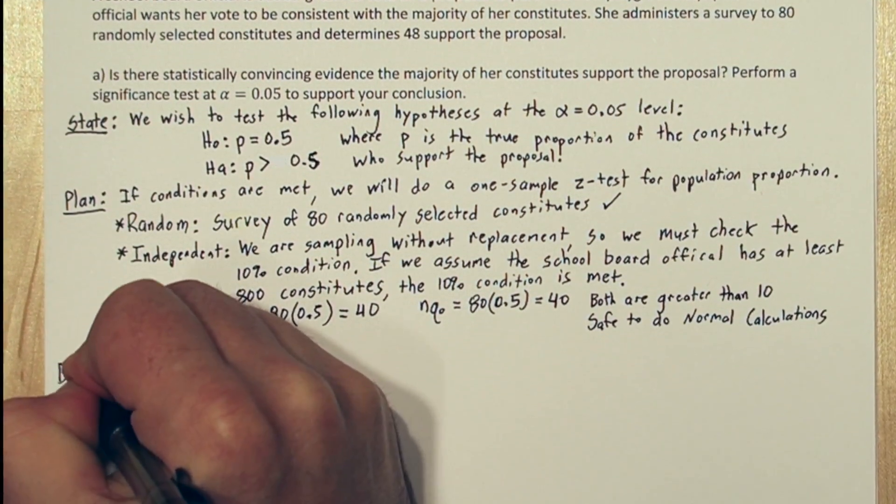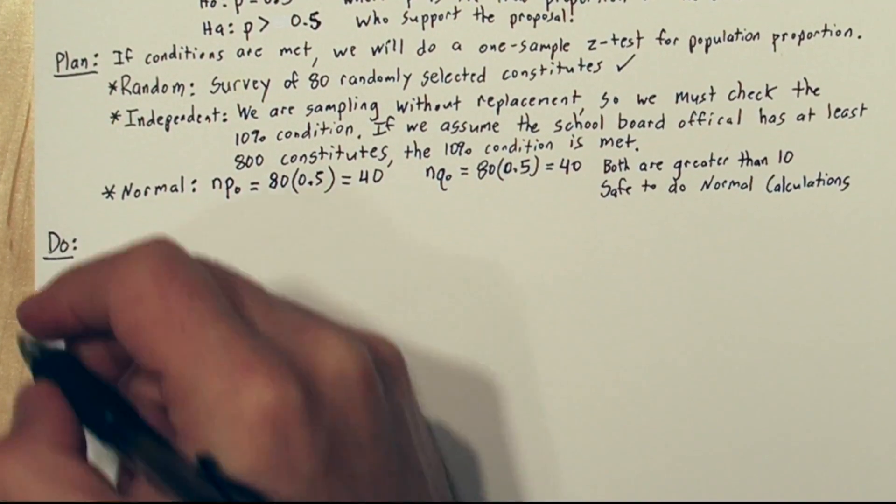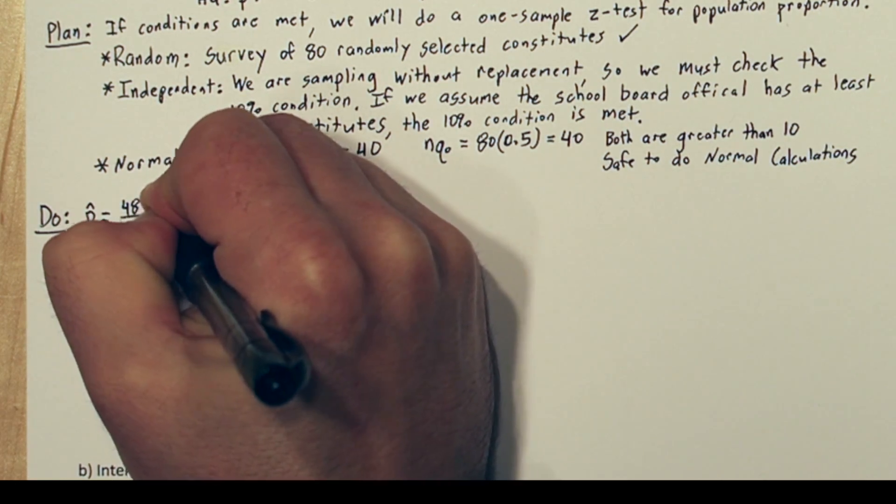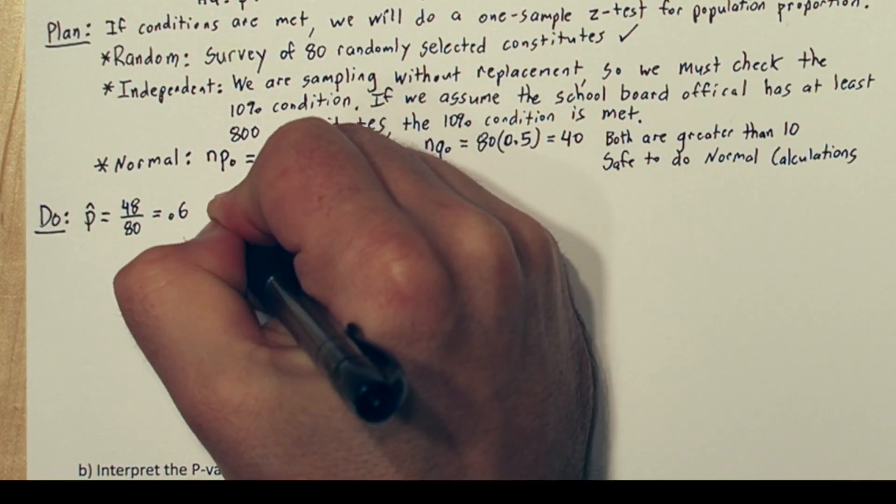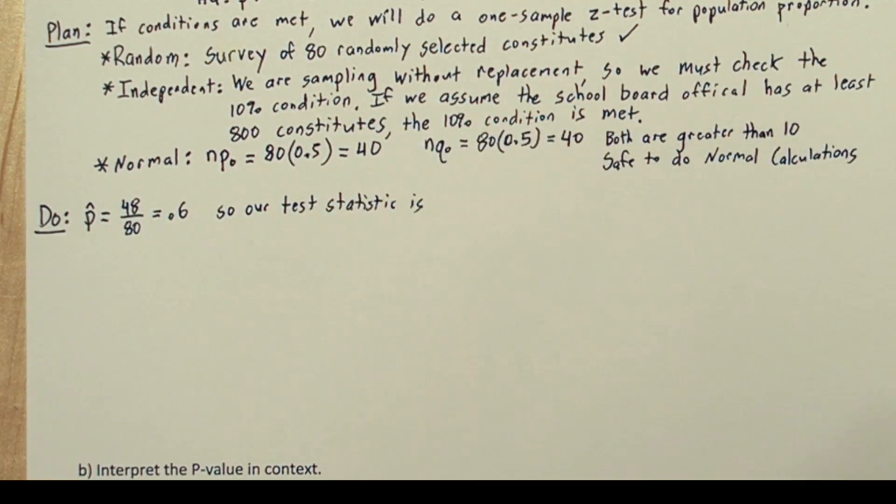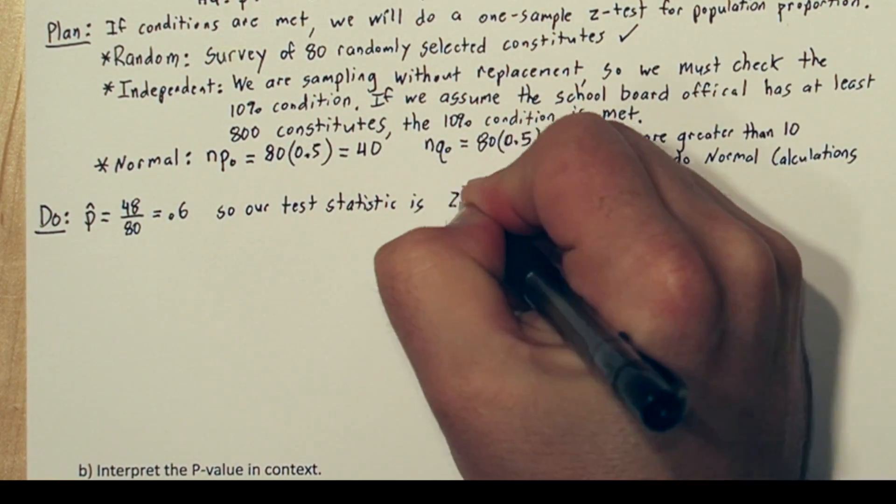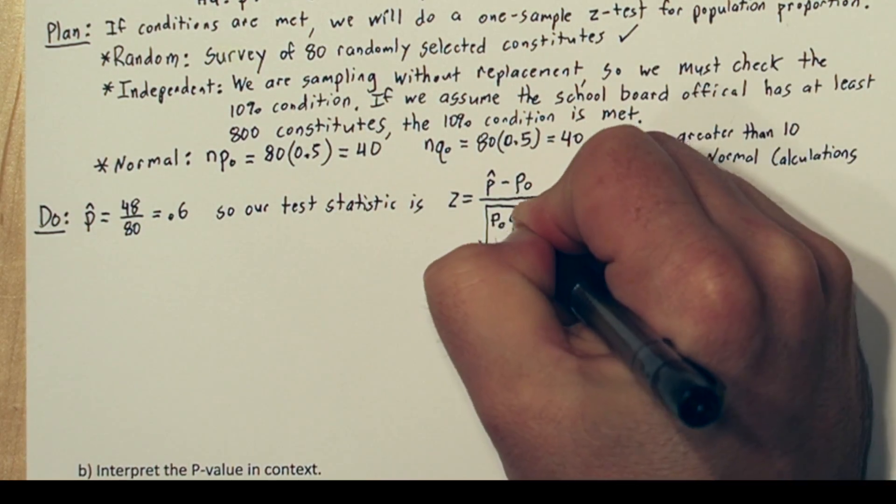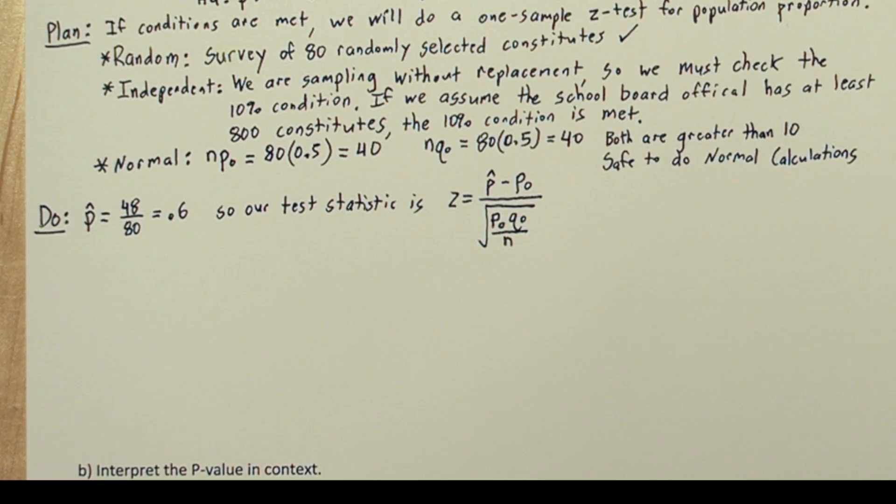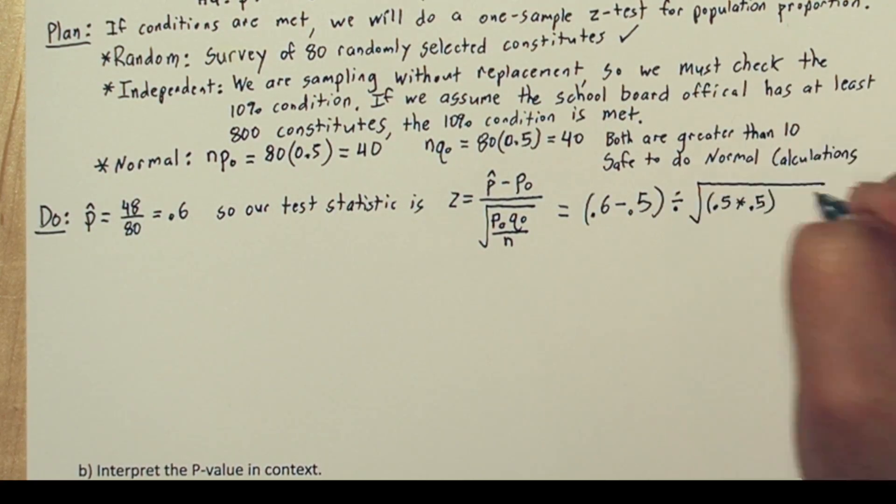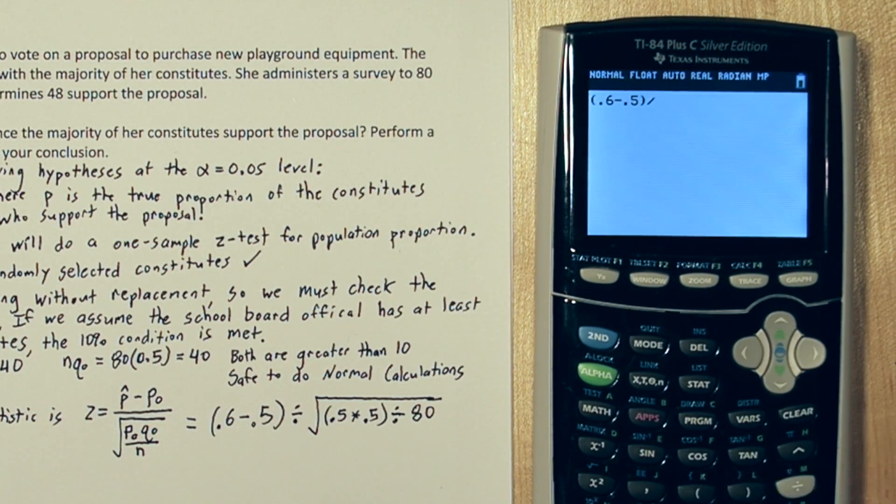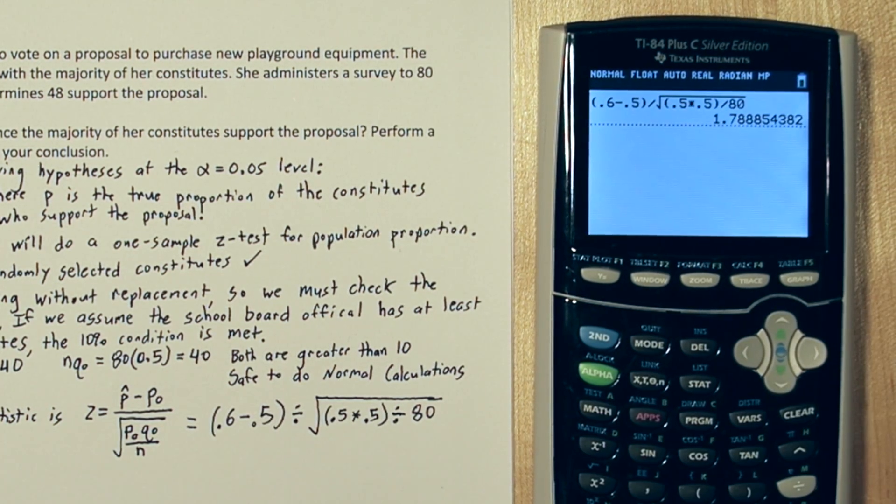For the do step, let's start by calculating p-hat. 48 divided by 80 is 0.6, so 60% of our sample supported the proposal. To figure out what our test statistic is, we're going to use this formula, p-hat minus p sub 0, all over the standard deviation of the sampling distribution if the null hypothesis is true. So I'm going to rewrite this in calculator-ready form. We'll put it in the calculator, and we get approximately 1.789.